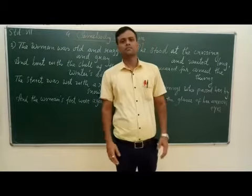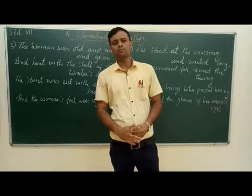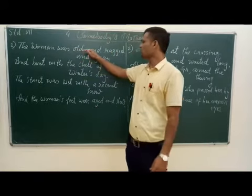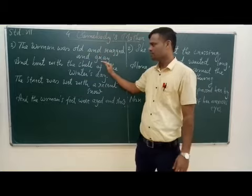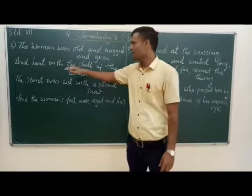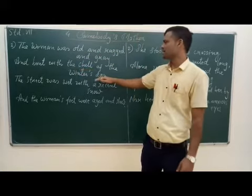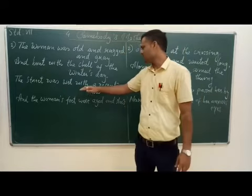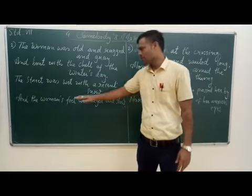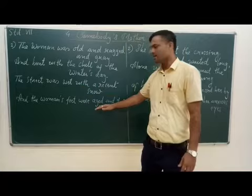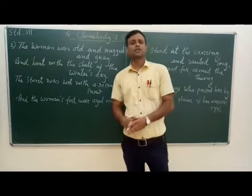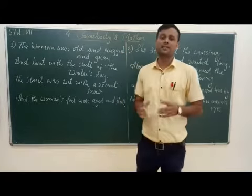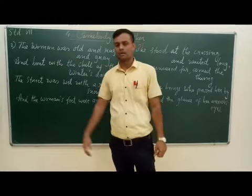Now let's understand the poem. First stanza: 'The woman was old and ragged and gray, and bent with the chill of the winter's day. The street was wet with the recent snow and the woman's feet were aged and slow.' This is the first stanza of the poem, and in it we are given the description of the old woman.